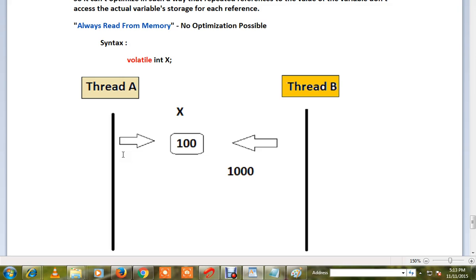Volatile means whatever value I have in my register, I don't bother. I'm going to always read from the memory because it might have been updated by some other thread. So I'm going to always read from the memory.